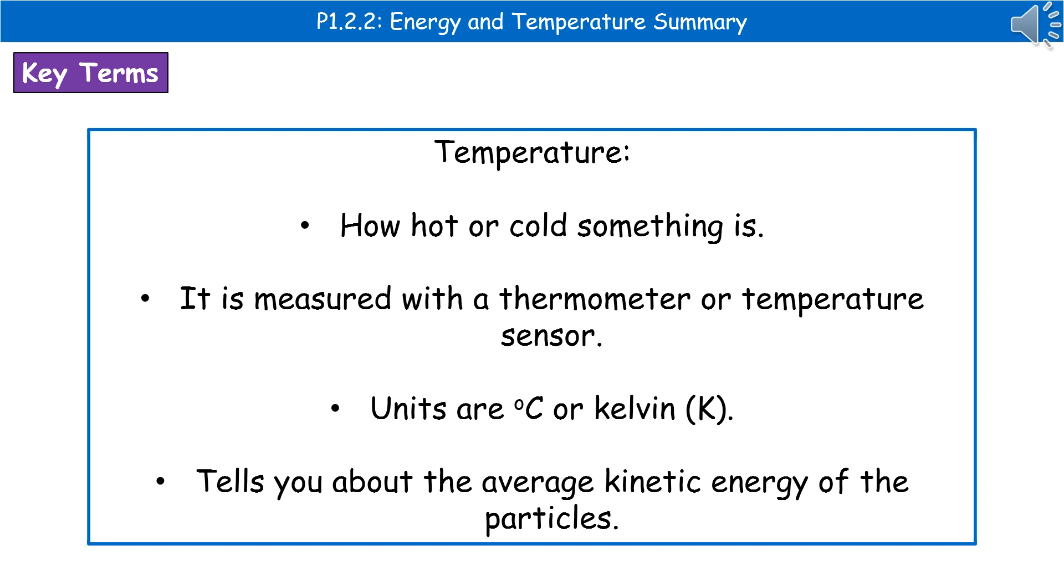When we're talking about temperature, we're talking about how hot or cold something is. The way we can work that out is by measuring it with a thermometer or temperature sensor. When we write about temperature, we'll be using one of two units, either degrees Celsius or Kelvin, which is given the symbol of a capital K. The temperature tells us about the average kinetic energy of the particles. So the hotter something is, the more average kinetic energy the particles have.